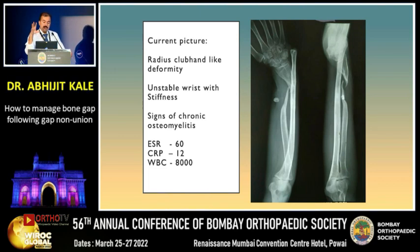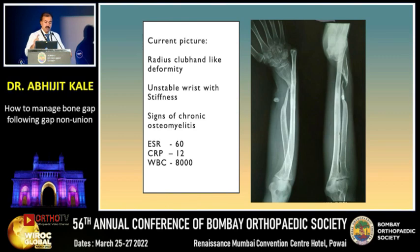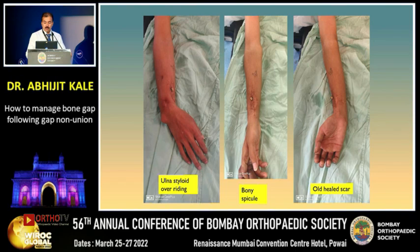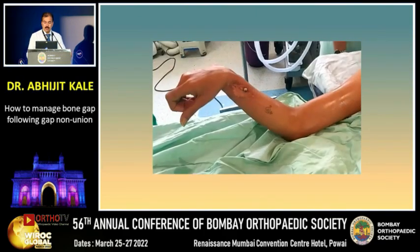The patient was given a treatment holiday, but ended up with a post-traumatic, post-infective radial club hand-like deformity. Once ulnar length was restored, a gap non-union defect remained on the radial side. Clinically, one could appreciate the ulnar styloid overriding, bony spicule protruding out, and an old healed scar.